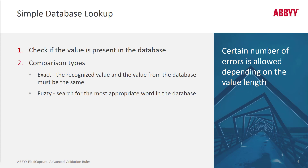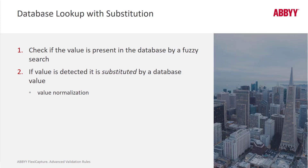The longer the string is, the more errors that we can allow and still match. Very helpful for things like company names, and certainly not helpful if you're doing something like a social security number — there you want to do an exact match, not a fuzzy match.